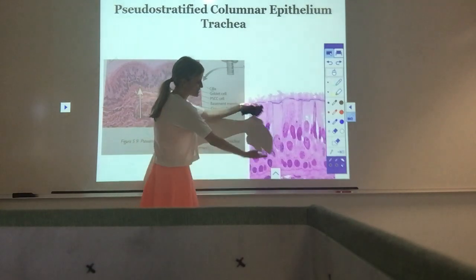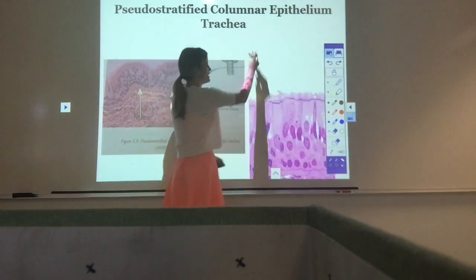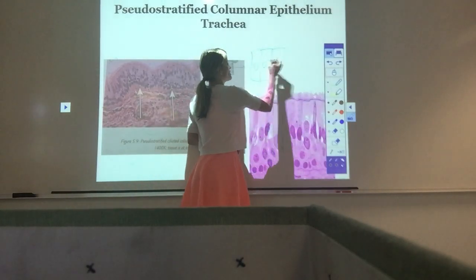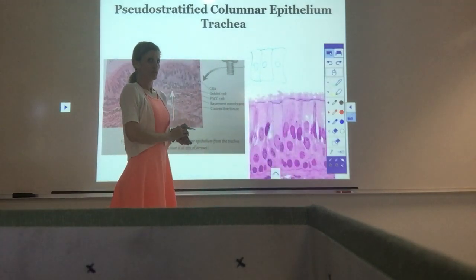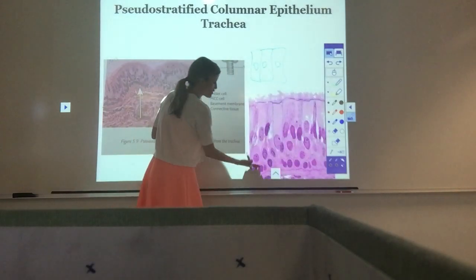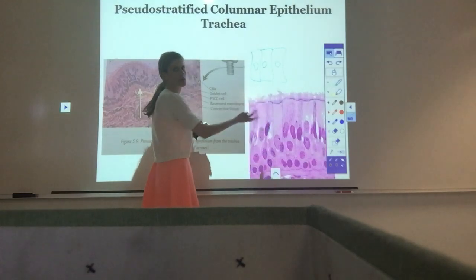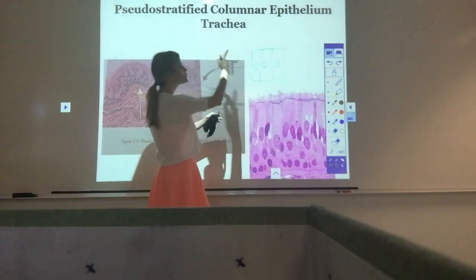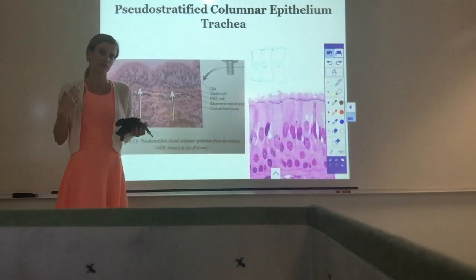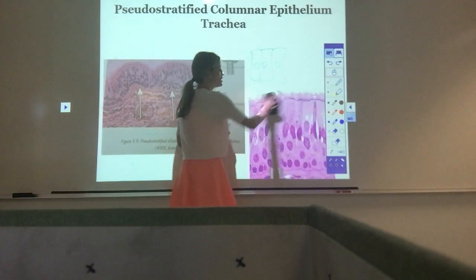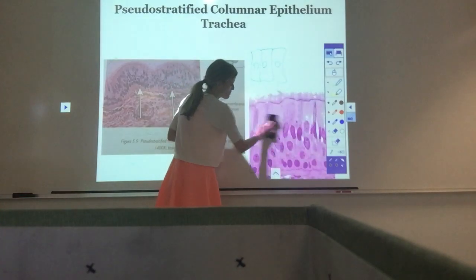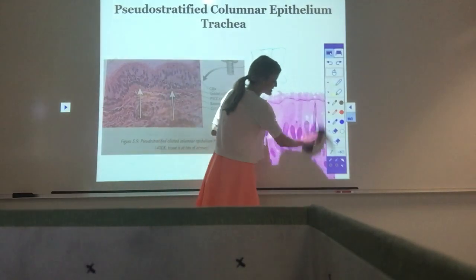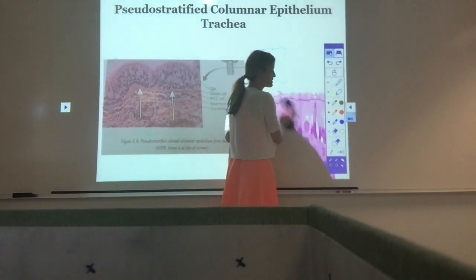You can tell it's pseudostratified because the nuclei are all at different levels toward the bottom. If it were simple columnar, the nuclei would all be in a row. We'll see another type where the nuclei go all the way up to the top — that's transitional epithelium. So the key: nuclei in the bottom two-thirds = pseudostratified ciliated columnar; nuclei straight in center = simple columnar; nuclei all the way to the top = transitional.